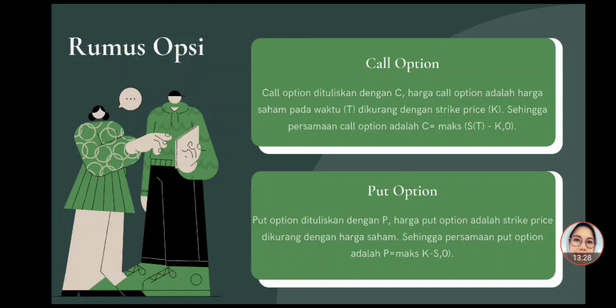Untuk put option dituliskan dengan P. Harga put option ini adalah pengurangan harga strike price dengan harga saham, sehingga persamaan put option-nya: P = max(K - S, 0). Dari persamaan put option tersebut diketahui bahwa put option itu bernilai nol apabila harga sahamnya lebih besar dibanding dengan strike price-nya. Apabila harga sahamnya lebih rendah dibanding dengan strike price, maka put option adalah selisih dari strike price dengan harga sahamnya.